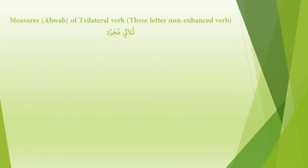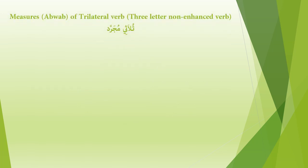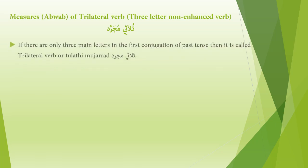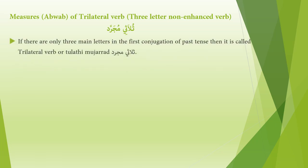The topic is Measures of Trilateral Verb — the Three-letter Non-Enhanced Verb, abwaab thulathi mujarrad. If there are only three main letters in the first conjugation of the past tense, then it is called a Trilateral Verb, or thulathi mujarrad.